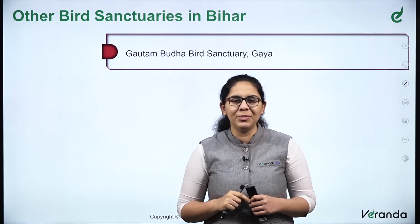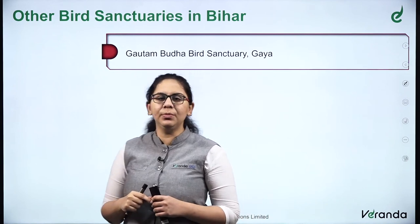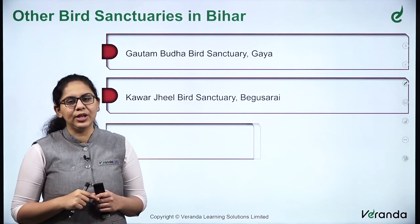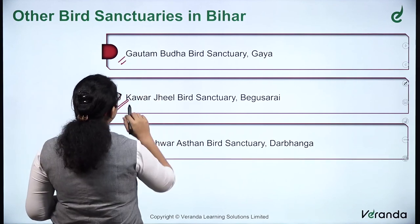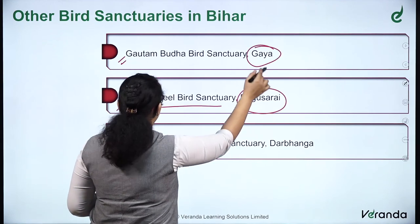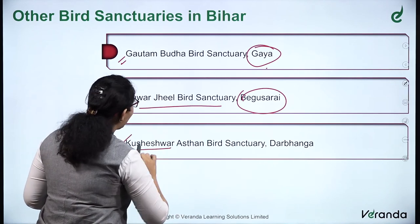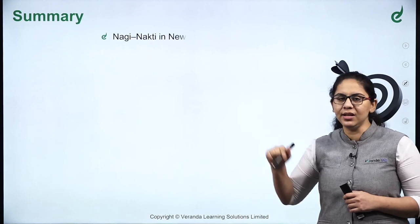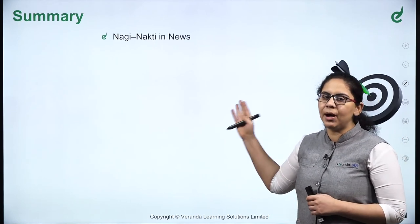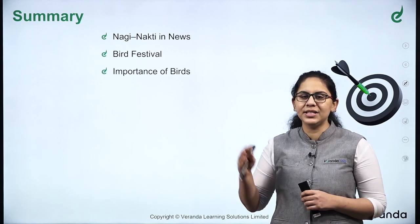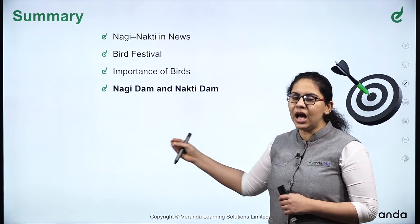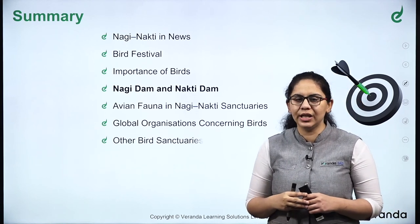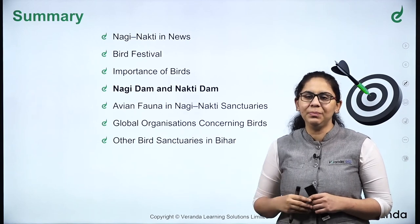Some factual information on other bird sanctuaries in Bihar: Gautam Buddha Bird Sanctuary is in Gaya, Bihar. Next is Kavar Jheel Bird Sanctuary in Begusarai. Then comes Kusheeshwar Asthan Bird Sanctuary in Darbhanga, Bihar. This was all for today about Nagi Nakti Dam — Nagi Nakti in news, the bird festival, the importance of birds, Nagi Dam and Nakti Dam, and the avian fauna in Nagi Nakti Sanctuaries.